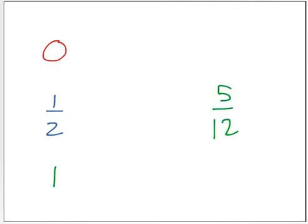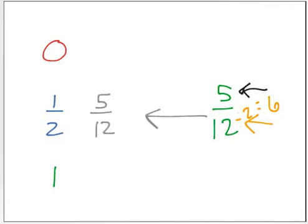Now what about the fraction 5 twelfths? I'm looking at this denominator of 12, and 12 divided by 2 is 6. If I compare the 6 to the 5, they're really, really close to each other. So I know 5 twelfths is almost half. So 5 twelfths goes close to a half.